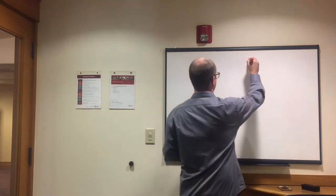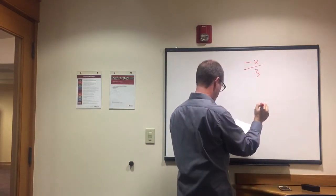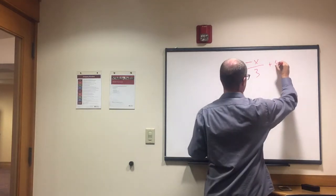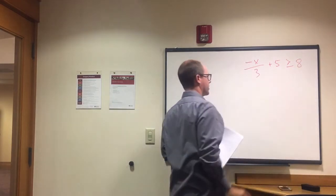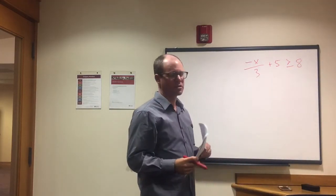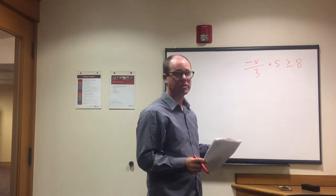So we'll go over that here. We have -x/3 + 5 ≥ 8. Okay. So, always when we have variables, we're going to get it by itself. That's our first step.